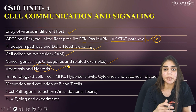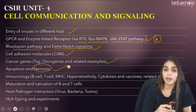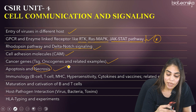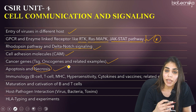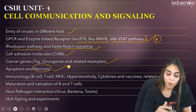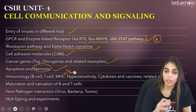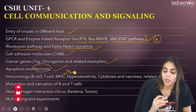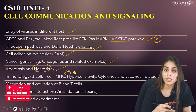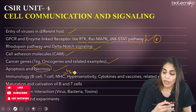Coming to immunology: have a detailed understanding of B cells, T cells, and MHC — MHC class 1 and class 2. Learn the four types of hypersensitivity reactions, cytokines, vaccines, and related experiments. Questions from vaccines may appear as direct questions in Part B, or as experiment-related and graph-reading questions in Part C.